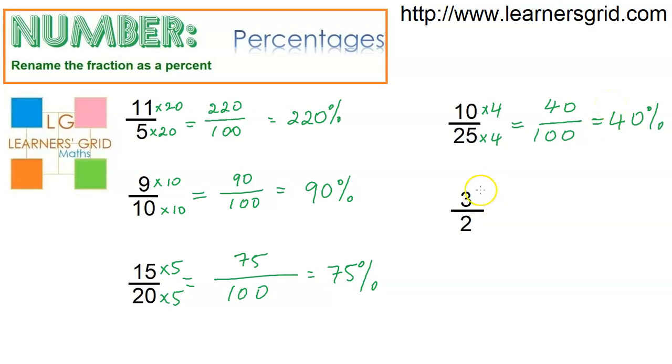And the last one here, I have 3 over 2, that's three halves, but I need a denominator of 100. So how do I get 100 from 2? 100 divided by 2 is 50, so if I multiply by 50, do the same to the top, and I will get 150 over 100, and that is the percentage 150 percent. And that's how these are done.